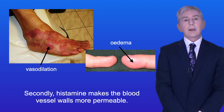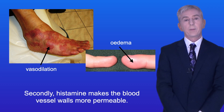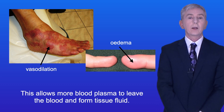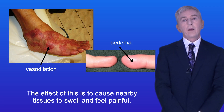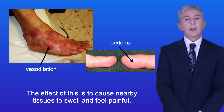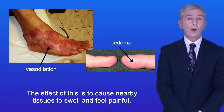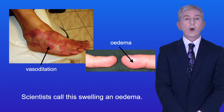Secondly, histamine makes the blood vessel walls more permeable. This allows more blood plasma to leave the blood and form tissue fluid, and the effect of this is to cause nearby tissues to swell and feel painful. Scientists call this swelling an oedema.